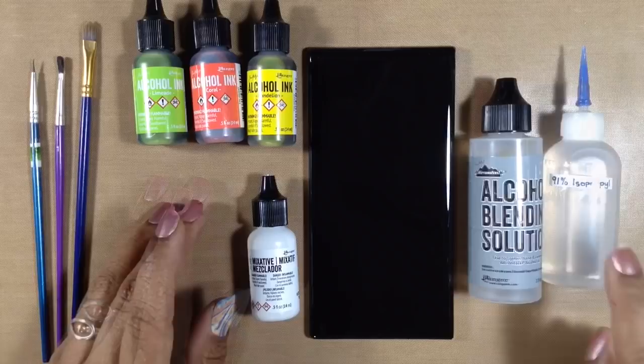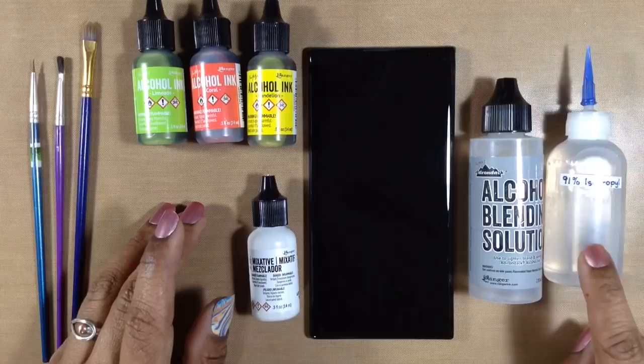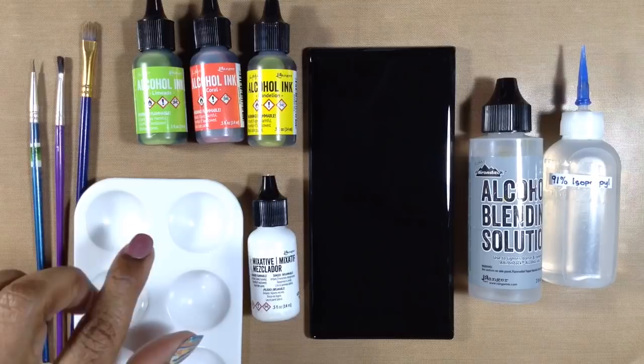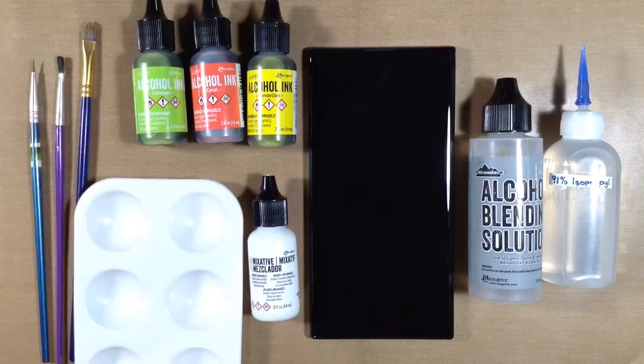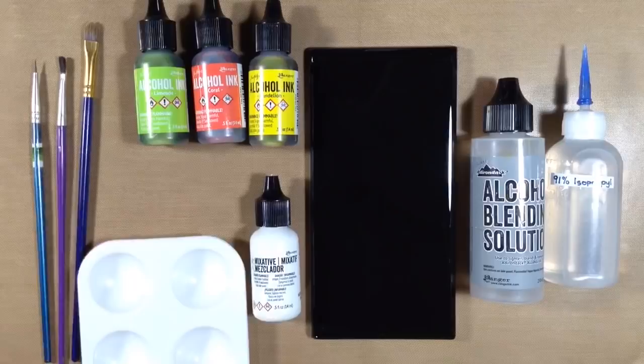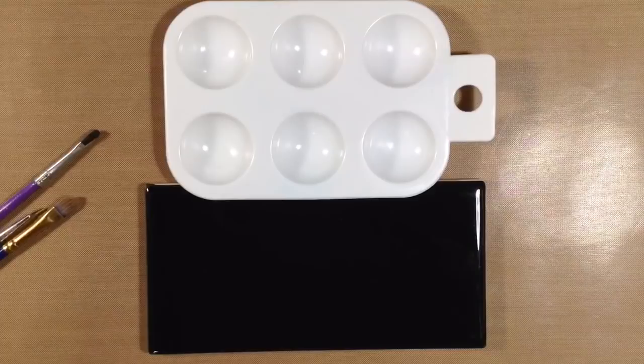Some alcohol blending solution, and I'm also going to use some 91% isopropyl alcohol. Anything over 90% is good. You don't need both, but I like mixing the two sometimes. And then finally, something to mix your inks and alcohol solution in. I'm going to use this little palette. If you're working on a Ranger craft mat like I am, theoretically you could just mix your inks right here too.